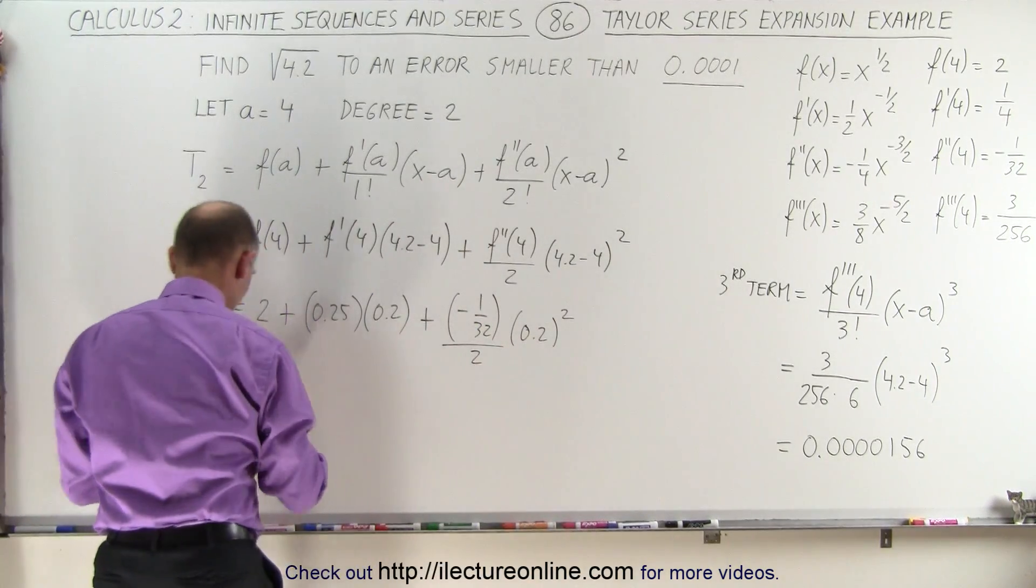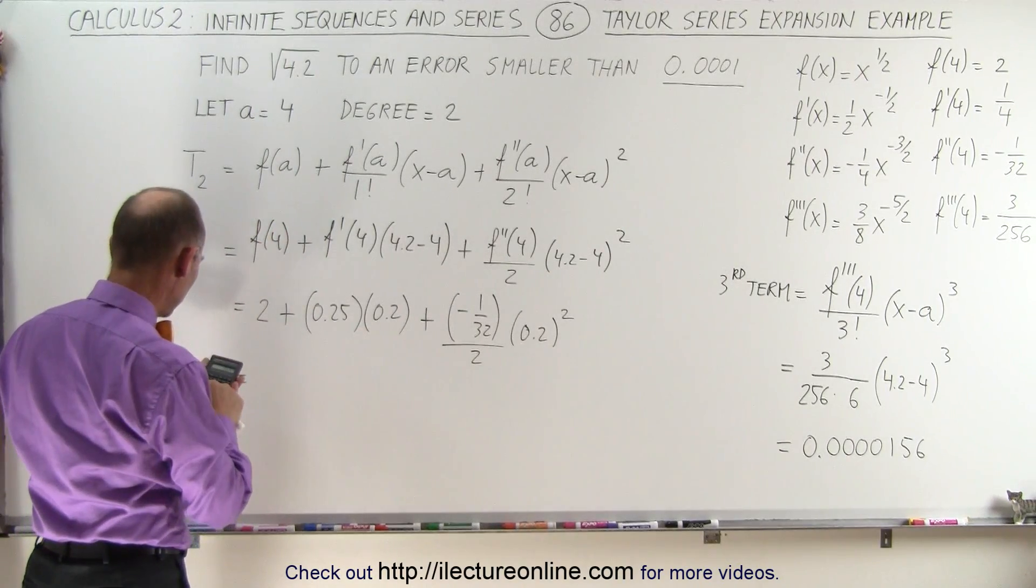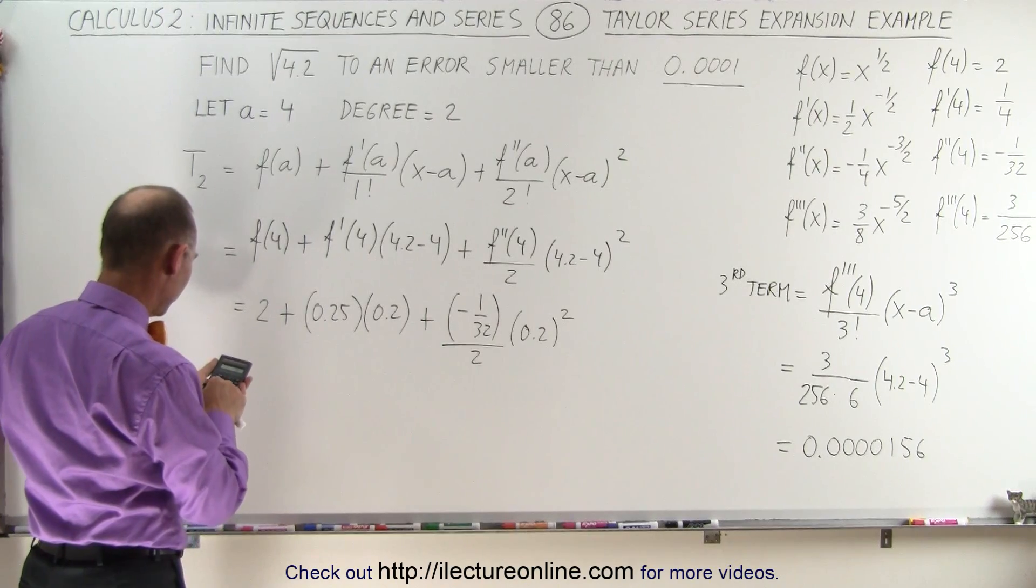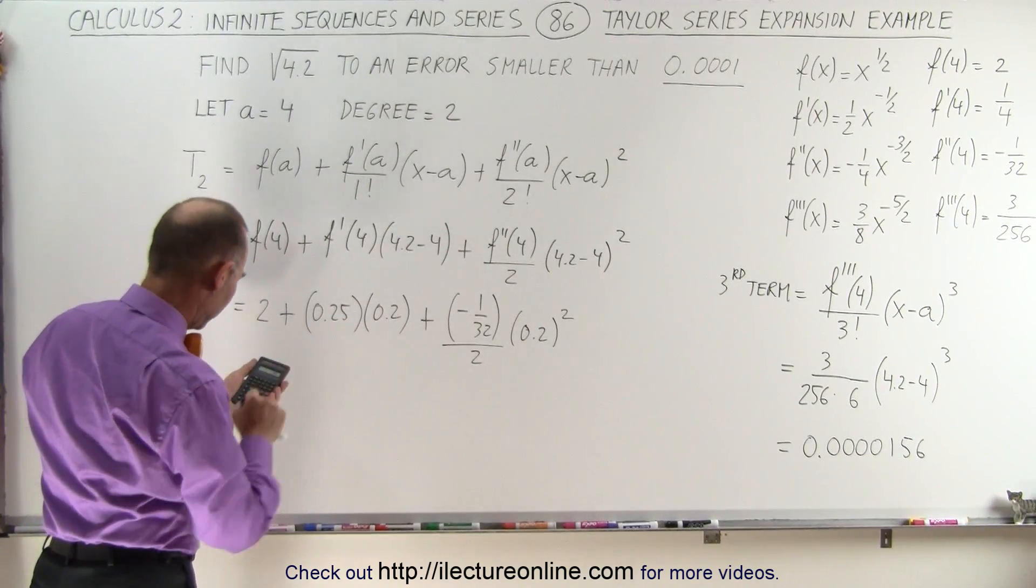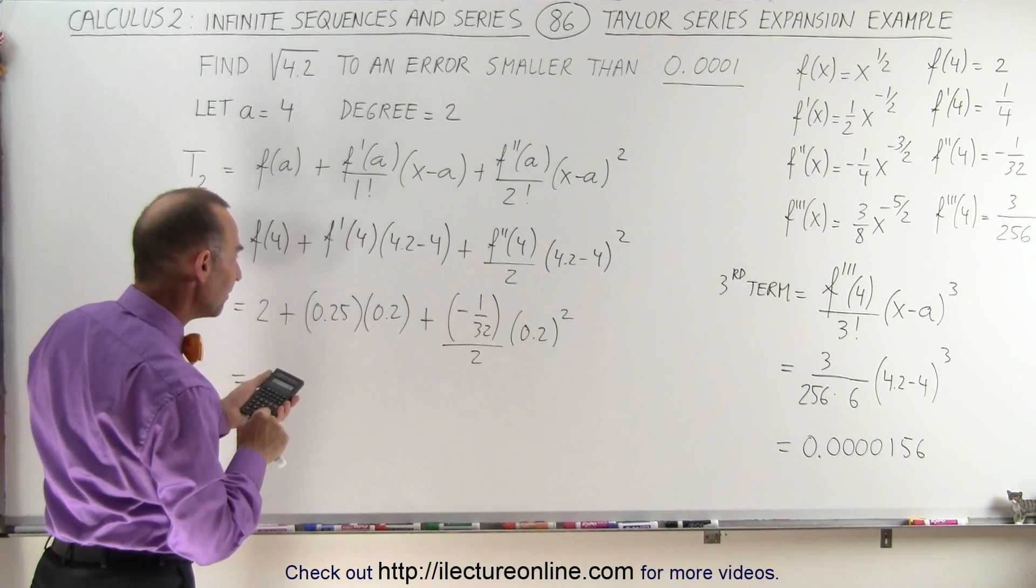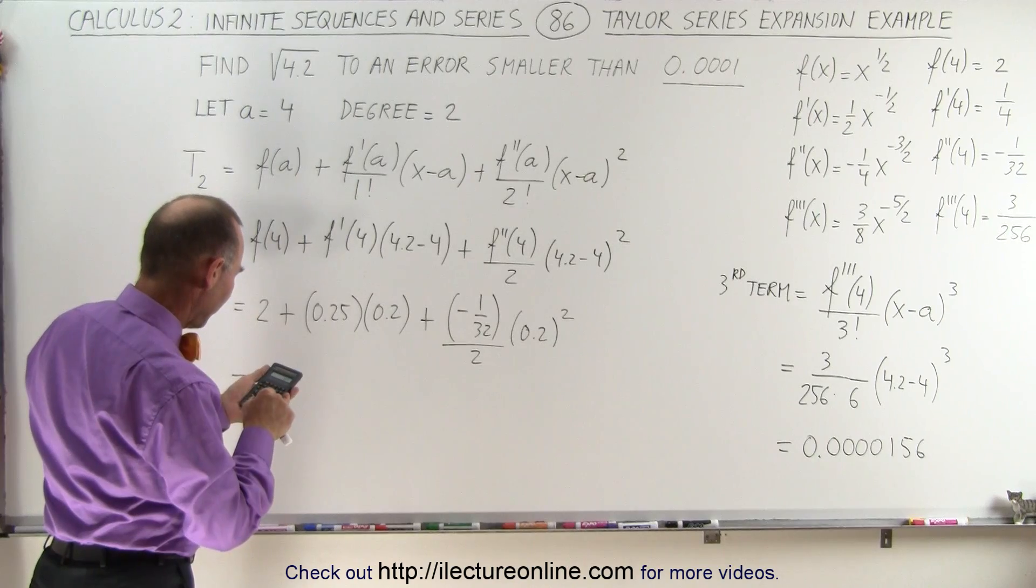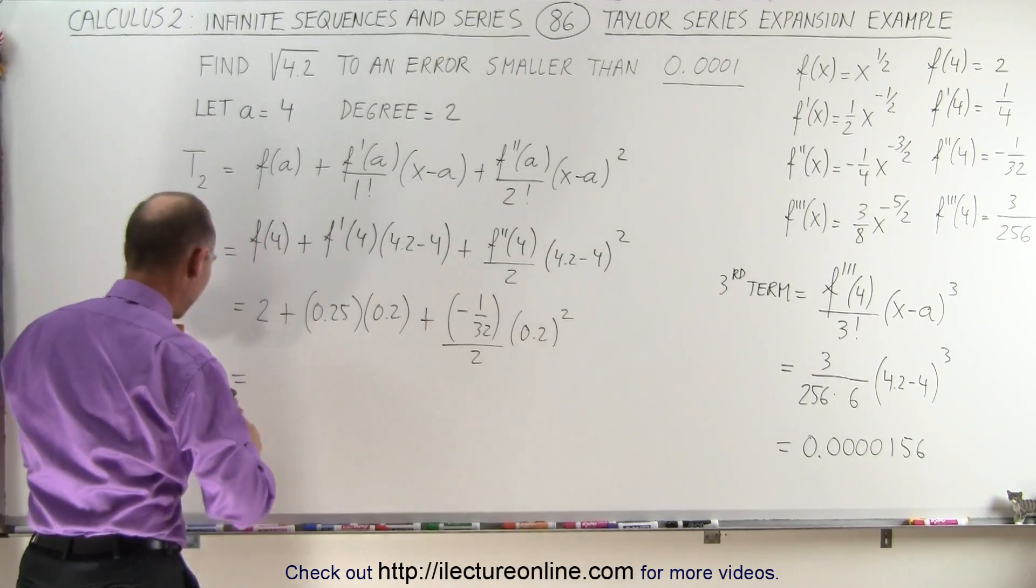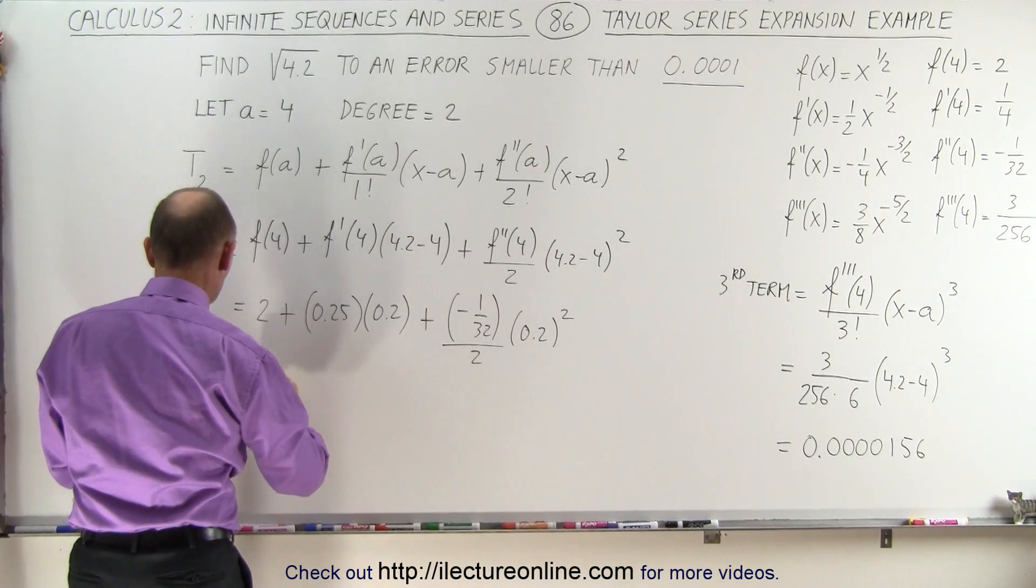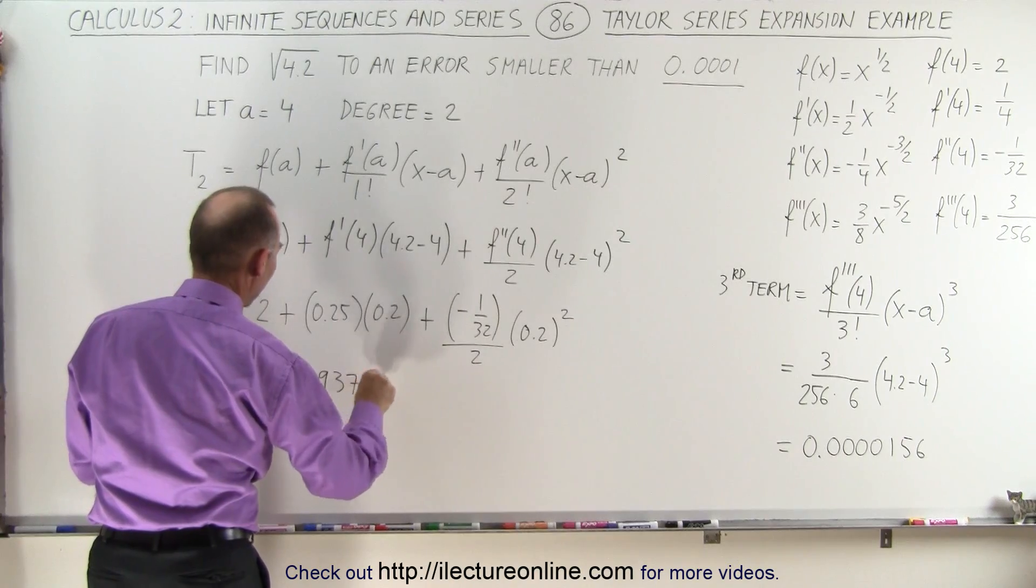Let's find out what that's equal to. So this is easy. There would be 2 plus 0.25 times 0.2 and then minus the quantity 0.2 squared divided by 32 divided by 2, and we end up with the number 2.049375.